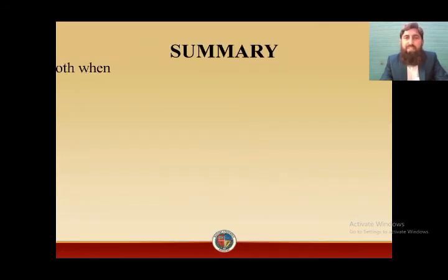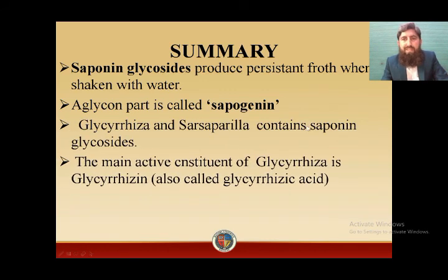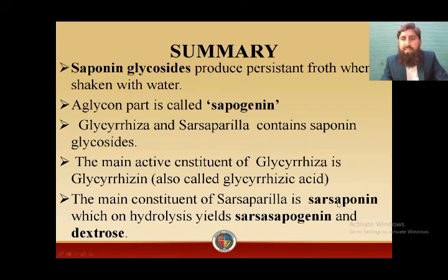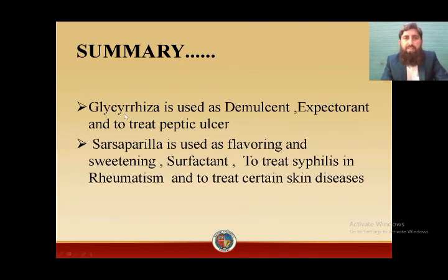Summary of what we have learnt in today's lecture: saponin glycosides produce persistent froth when shaken with water and are named for this property. The aglycone part is called sapogenin. Glycyrrhiza and sarsaparilla are the crude drugs which contain saponin glycosides. The main active constituent of glycyrrhiza is glycyrrhizin, also called glycyrrhizic acid. The main constituent of sarsaparilla is sarsasaponin, which on hydrolysis yields sarsasapogenin and dextrose. We also studied the medicinal and therapeutic uses of these crude drugs. Glycyrrhiza is used as a demulcent, expectorant, and to treat peptic ulcer, while sarsaparilla is used as a flavoring agent, surfactant, to treat syphilis, rheumatism, and certain skin diseases.